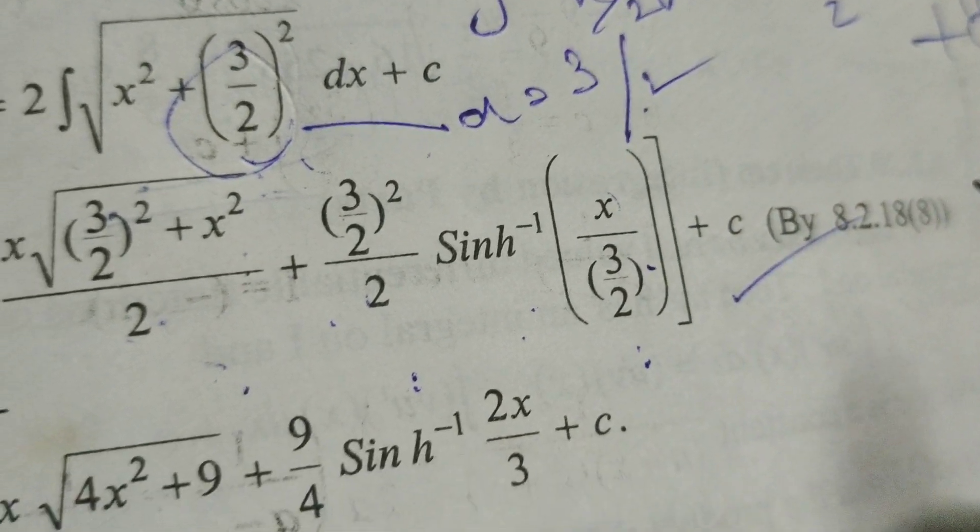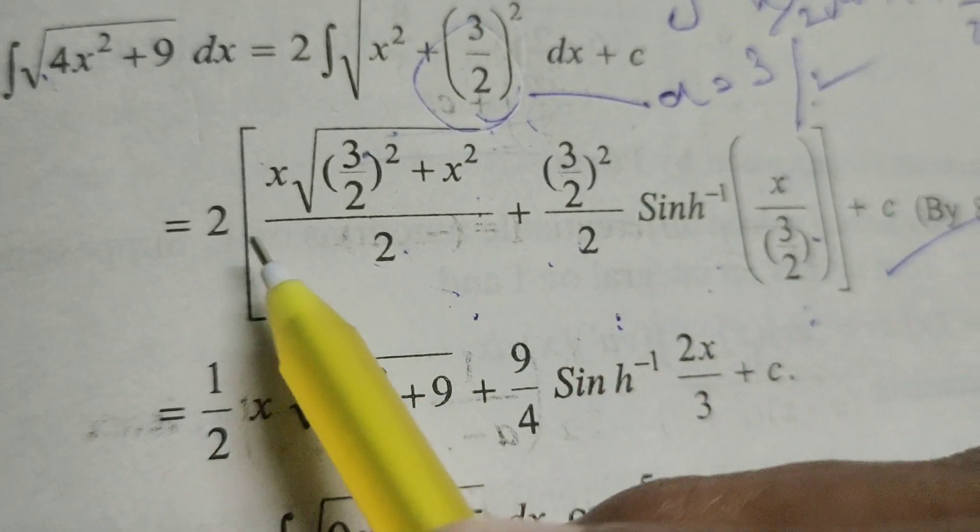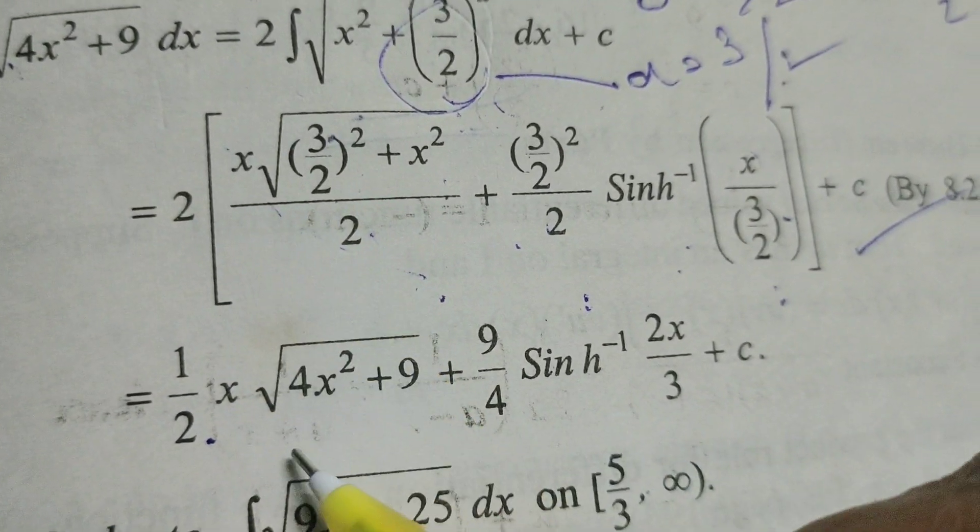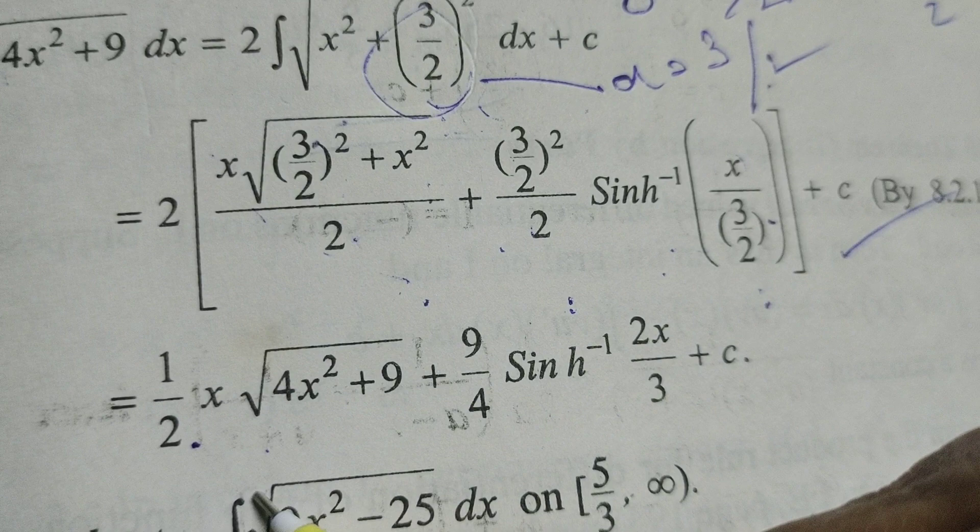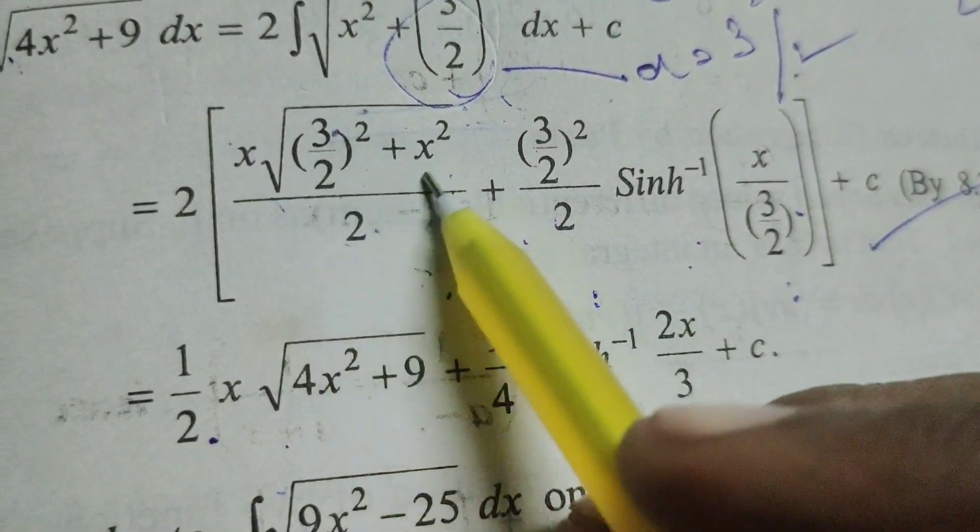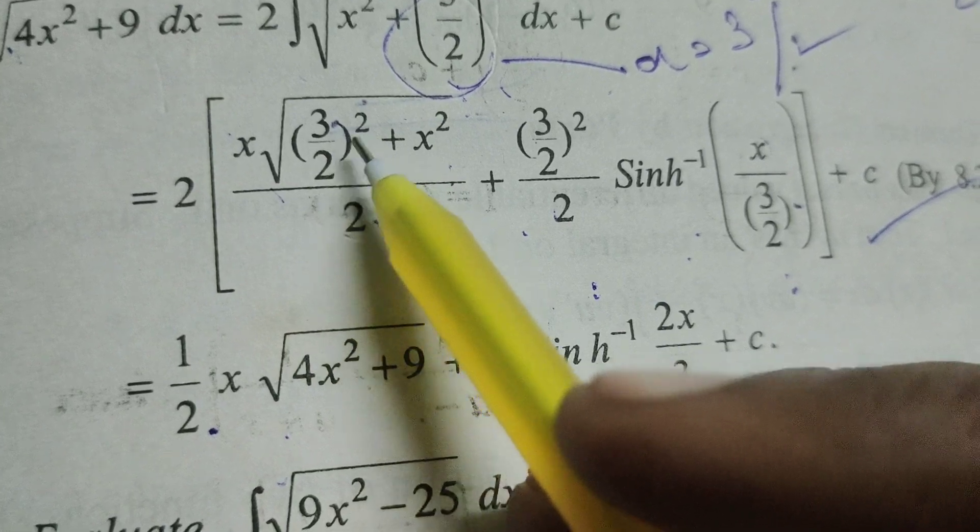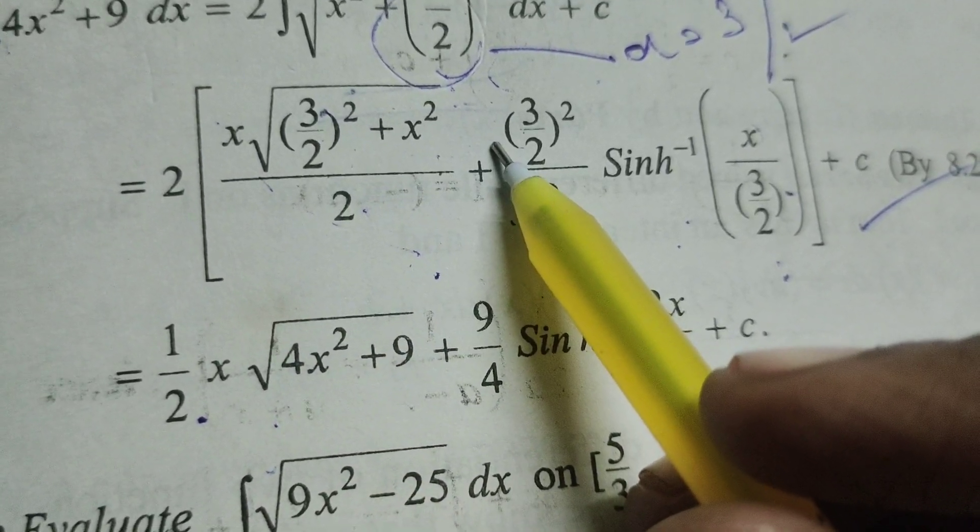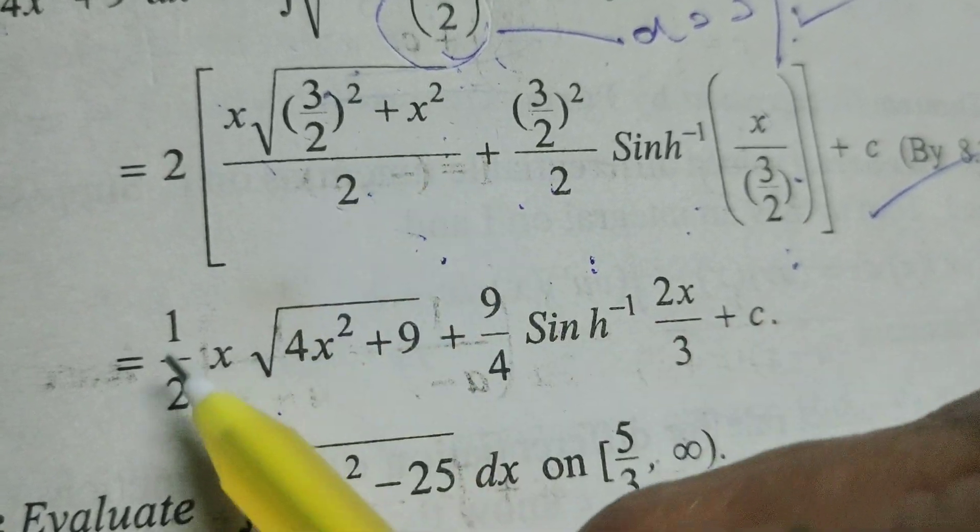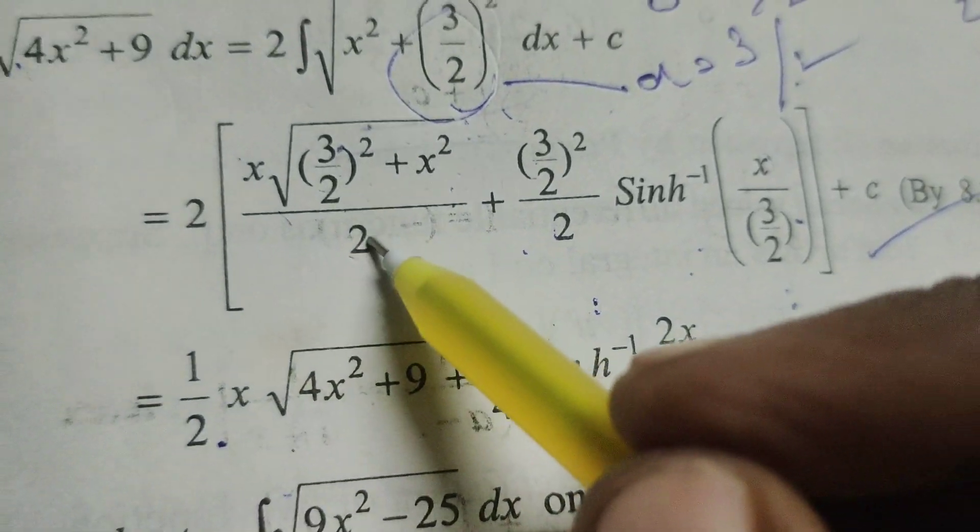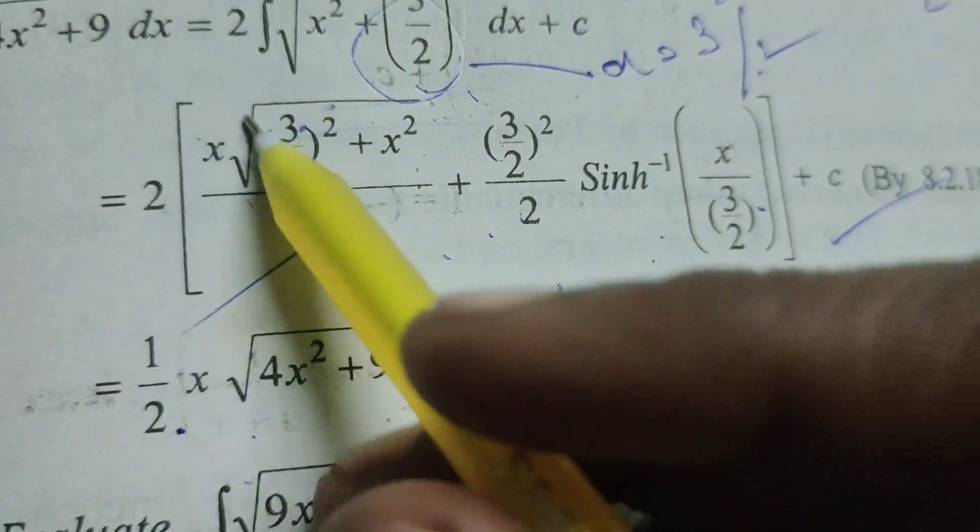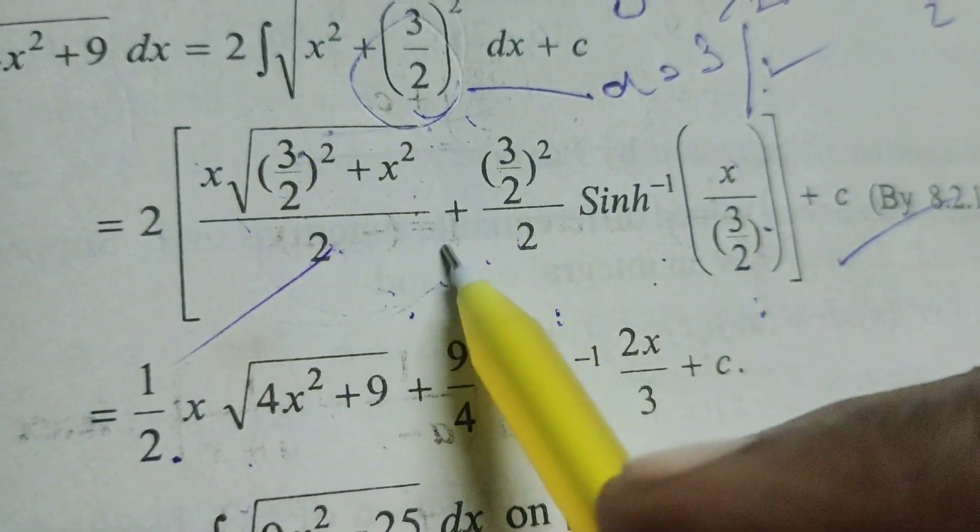After integrating, adding the constant plus c. Now simplify this. Here 1 by 2 into x root of 9 by 4 plus x squared, that is 9 plus 4x squared. Here write divided by 4 means 1 by 2. This 2 gets cancelled after multiplying these 2 here in this value.